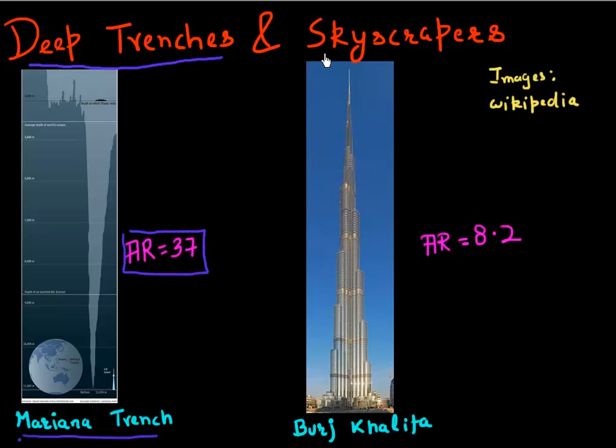We also talked about the tallest skyscraper in the world, which is Burj Khalifa, and it has an aspect ratio of 8.2. Later, I showed that the etches or structures that we are making in our semiconductor technology are exceeding the aspect ratio that we see in these deepest trenches and tallest buildings.